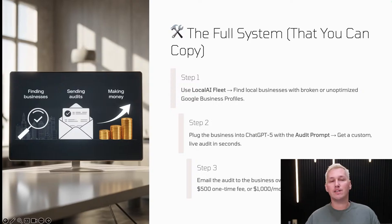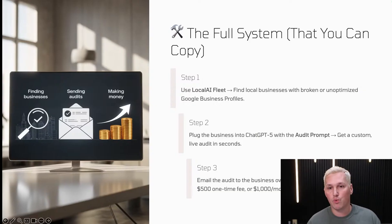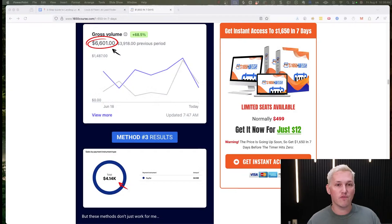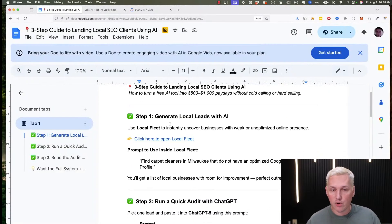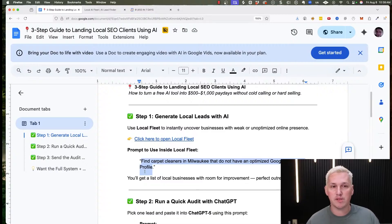I've boiled this down into three steps and I'm going to walk you through what that looks like. Step one: I wanted to find some leads to test this out on and actually run an audit with GPT5. I used a software called Local AI Fleet to find local businesses that already had broken or unoptimized Google business profiles.